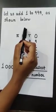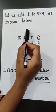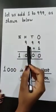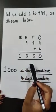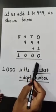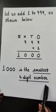Now which is the largest 3-digit number? The largest 3-digit number is 999. Now we shall learn about 4-digit numbers. Let us add 1 to 999 as shown below. When we add 999 to 1, we will get 1000, and 1000 is the smallest 4-digit number.